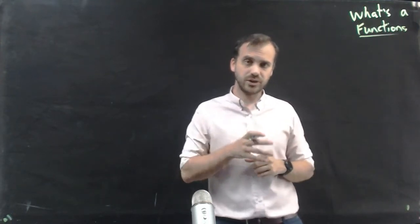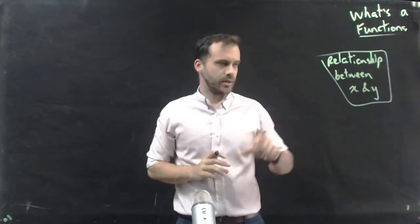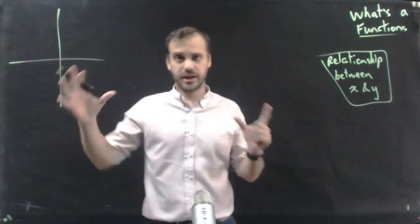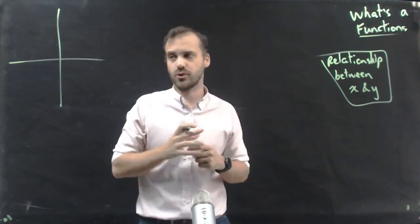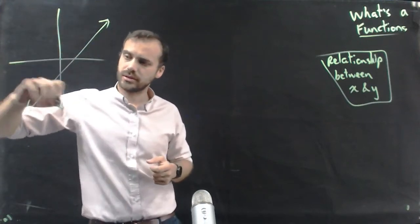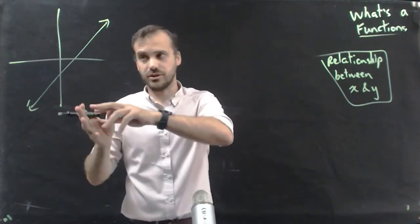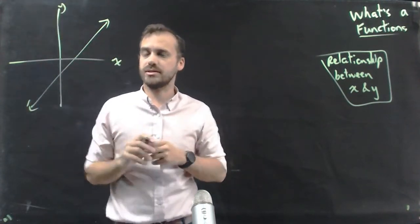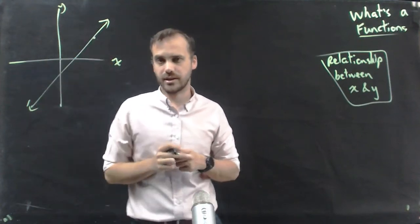So a function is, first of all, a relationship between x and y. A relationship between x and y. And it can be shown on a Cartesian plane. You've seen functions before — linear equations. A linear equation is a function. It's a relationship between the x-axis and the y-axis. If you know a point on the x-axis, you can find the y-axis.